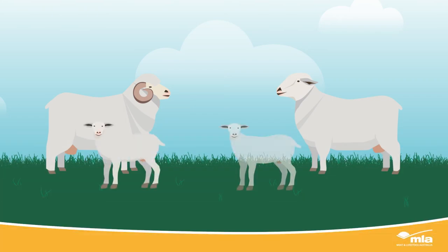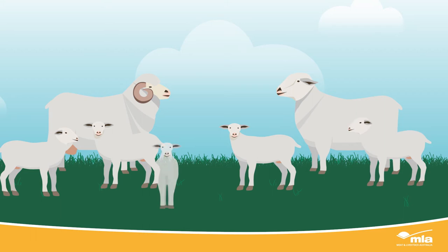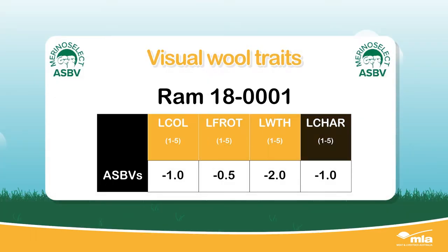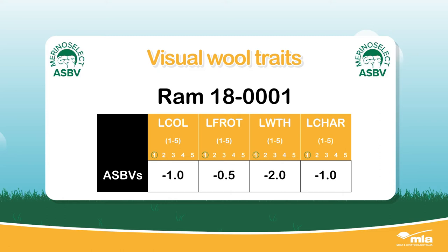Some ASBV traits that impact wool income can be visually scored. These visual wool quality traits are scored one to five, with one being more desirable, so a more negative ASBV is wanted for these traits. All wool quality visual traits are recorded after six months of age and reported as late traits.